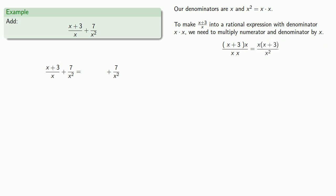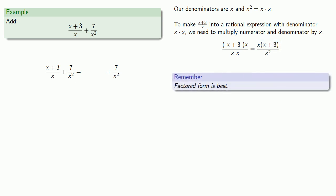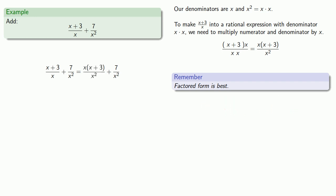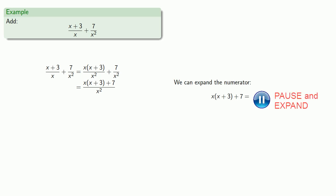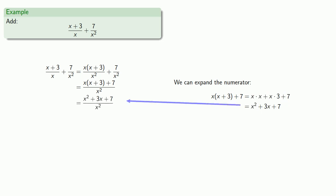For now we'll leave this in the form x times x plus 3, because remember, factored form is best. Now both fractions have a denominator of x squared, so we can add the numerators. And even though factored form is best, the numerator is not in factored form because it's no longer a product — it's actually a sum. And what this suggests is we should expand the numerator, and that gives us x squared plus 3x plus 7.